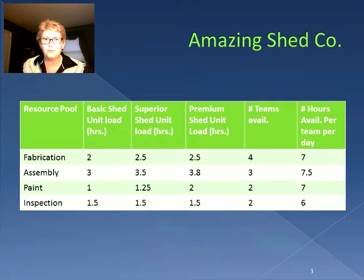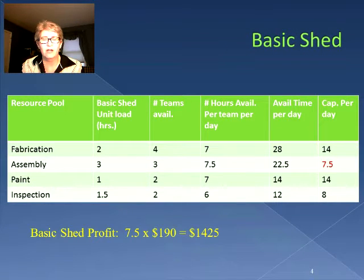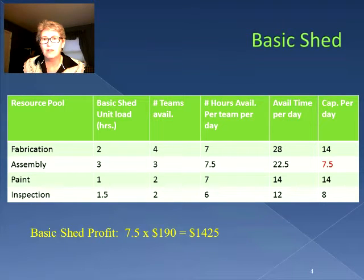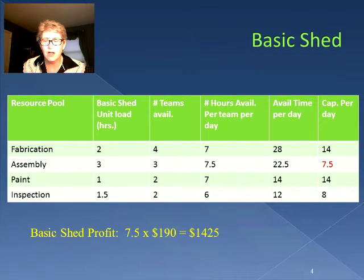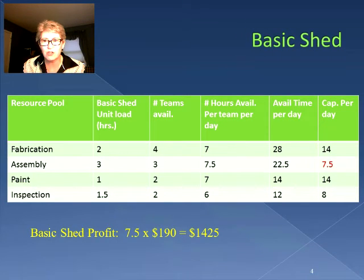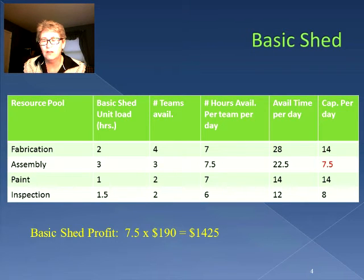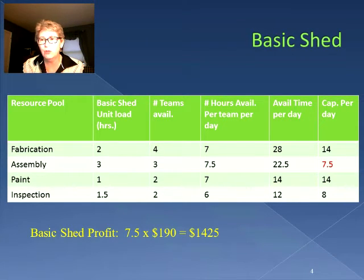Let's start with the basic shed. The unit load for a basic shed in fabrication is two hours, assembly is three, paint one, and inspection one and a half. Using the number of teams available per day and the number of hours available per team, we calculate the amount of time available for each resource. In fabrication we have 28 hours, assembly 22.5, paint 14, and inspection 12. Now we know how much time we have, and the unit load gives us our capacity per day. With 28 hours available and two hours needed for fabrication, in the fabrication area we could produce 14 sheds.